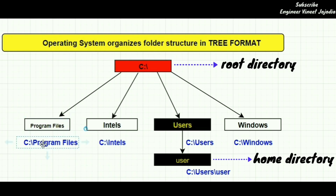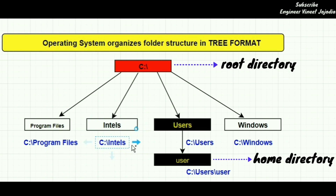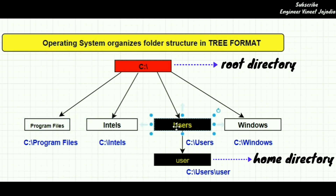So this is called the absolute path: C:\ Program Files. Now, if you want to reach the Intel directory which is present inside the root directory, you have to write C:\Intel. This is the absolute path for the directory called Intel, and this is the absolute path for the directory called Program Files. Now, if you want to reach the Users directory, you have to do C:\Users. You have reached the Users directory with the help of the root directory. This is the root directory: C:\.